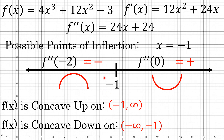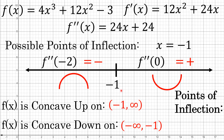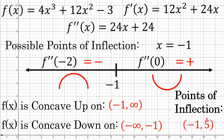Because the function changes concavity at x equals negative 1, this is an actual point of inflection. Evaluating f(negative 1) gives 5, so the point of inflection is (negative 1, 5). At this point we've gathered all the information needed to accurately sketch the graph of f(x) equals 4x cubed plus 12x squared minus 3.